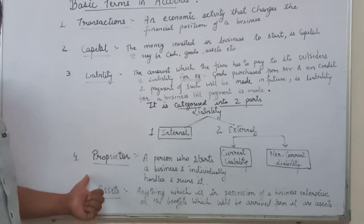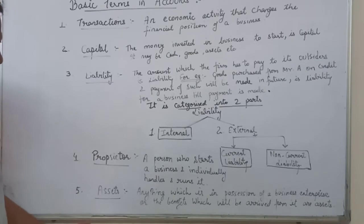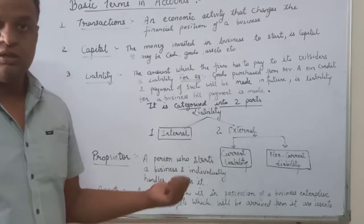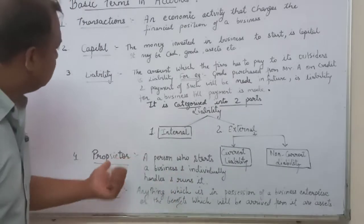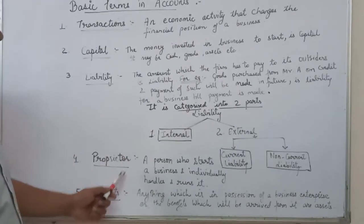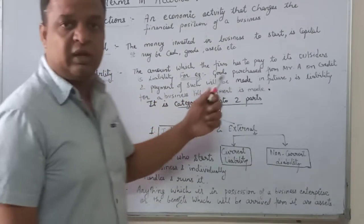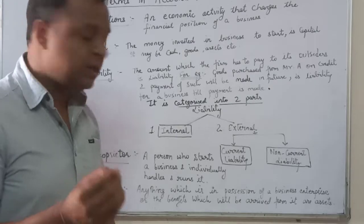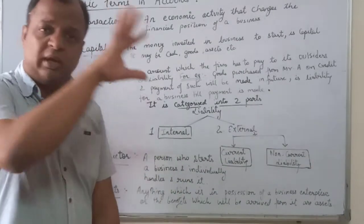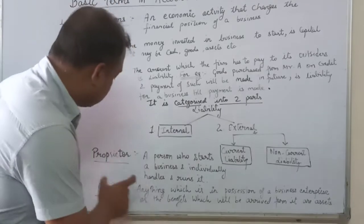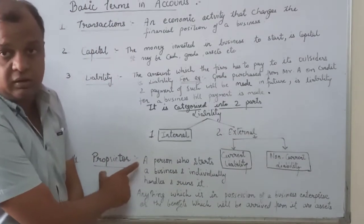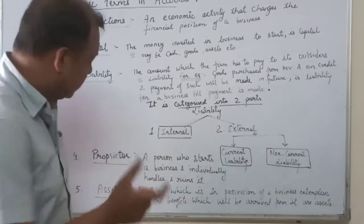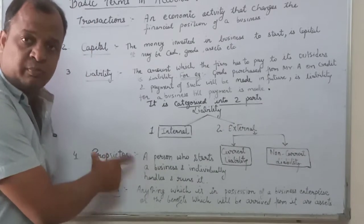The next term is proprietor. A person who starts a business and individually handles and runs it is the proprietor. For example, Mr. Ram started business and he himself is running and handling all the activities of the business — that person is named the proprietor. This word proprietor will be used many times in your business studies and accounting.